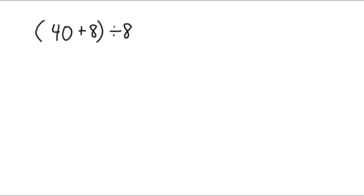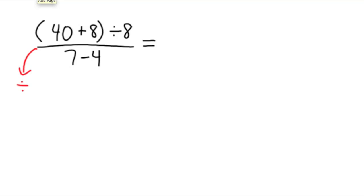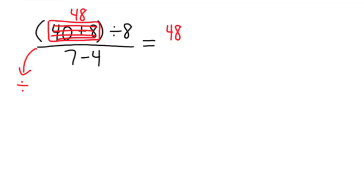So this next one, we have the quantity 40 plus 8, divided by 8, all over 7 minus 4. Again, we have to perform everything in the numerator, everything in the denominator, and the very last thing we do is divide. So in the numerator, we're going to follow the order of operations. The first thing we see is the parentheses. 40 plus 8 is 48. Now we're done with that part, so we're going to copy down what we have in the numerator: 48 divided by 8. And in the denominator, we still have 7 minus 4.